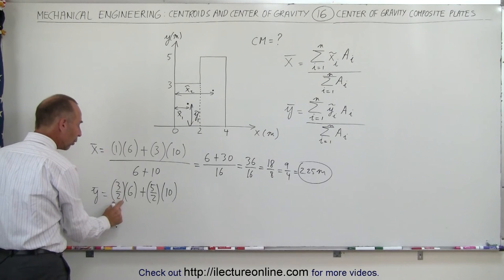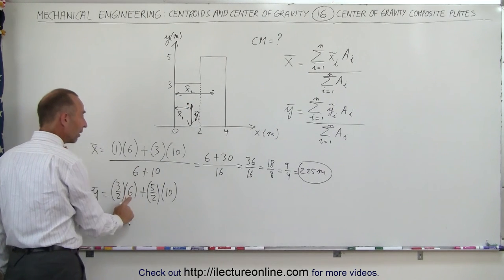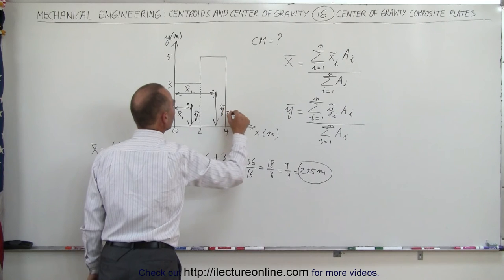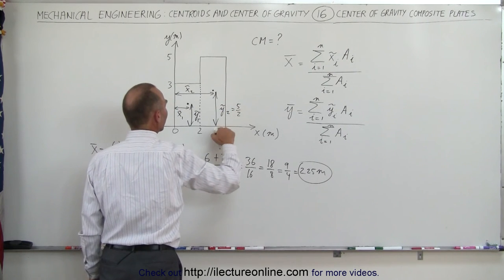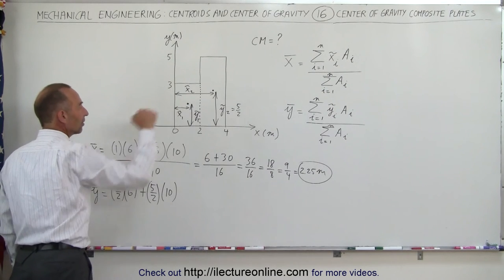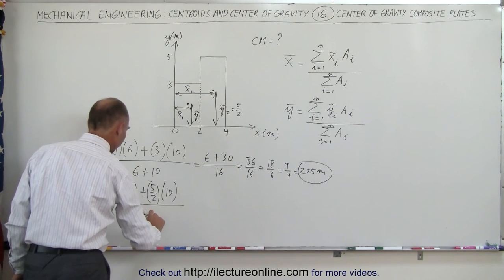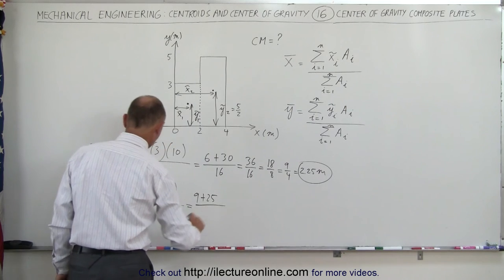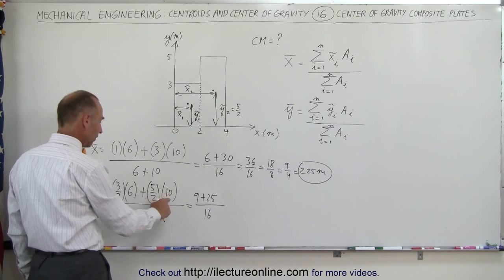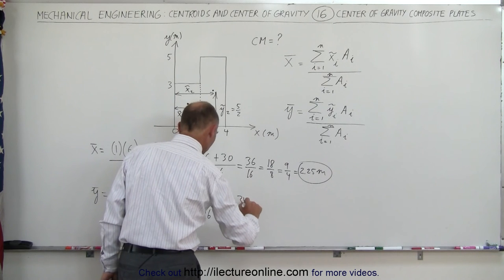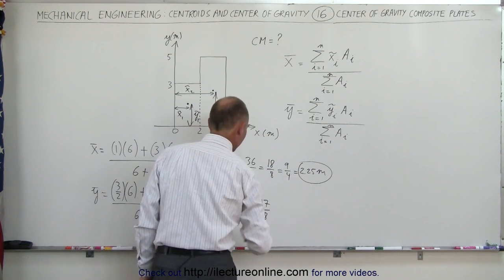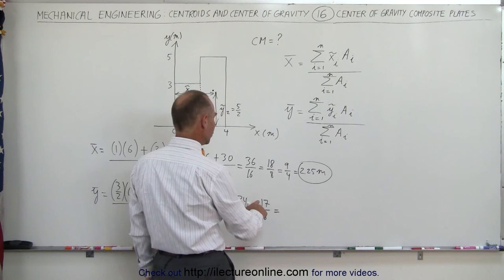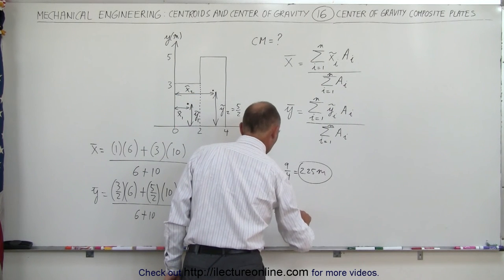So the y-bar equals the y coordinate of the first piece times its area, plus y sub 2 times the area of the second rectangle, all divided by 6 plus 10. That gives us 9 plus 25 divided by 16, which is 34 over 16, equal to 17 over 8. Since 8 goes into 17 twice with 1 remainder, that is 2.125 meters — the y coordinate of the center mass.